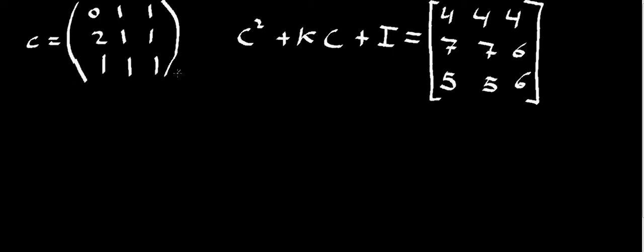For the next exercise, what we have is a matrix C, which is a 3 by 3 matrix, and then we have an equation where C is featured. We have C squared here and C here. We have the identity matrix and we know the result of that equation. In the middle, we have this variable K, this number K, and we need to find out what the value of K is.